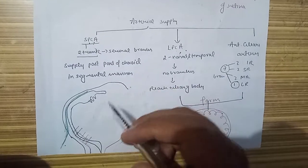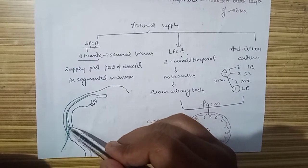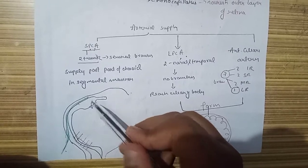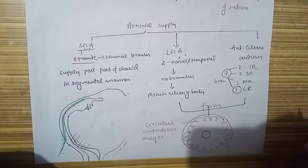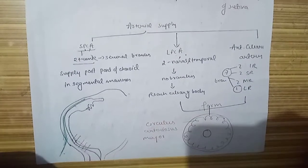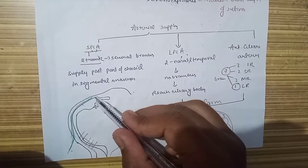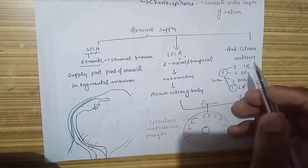Along their pathway, they supply the ciliary body, so our ciliary body is also supplied. Now remains the iris, but it is not that easy that it will directly supply our iris.